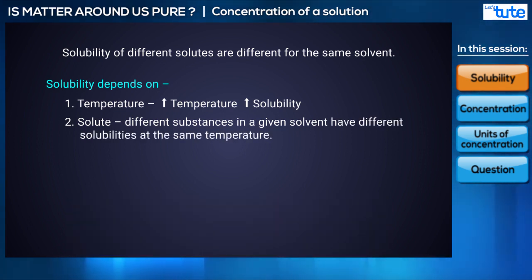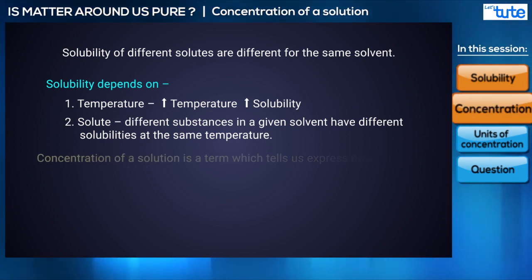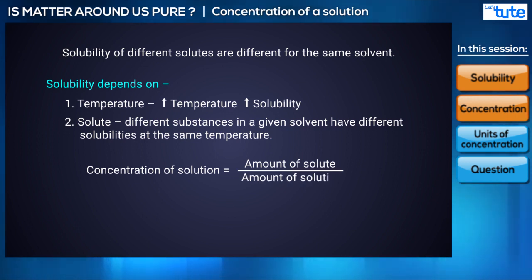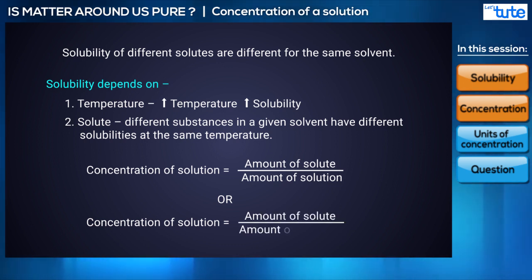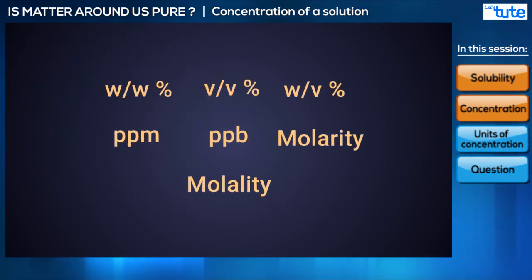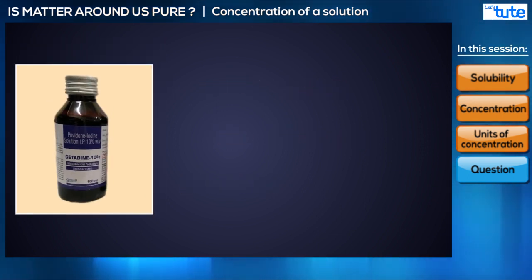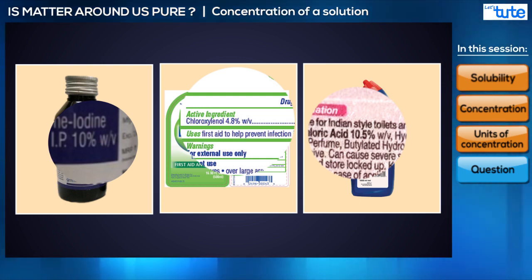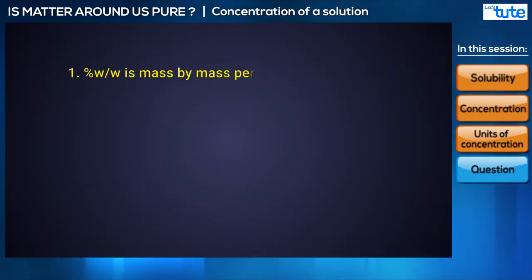Now we need a term to express how much solute and solvent is present in a given amount of solution. This term is called the concentration of a solution, defined as the amount of solute per amount of solution, or per amount of solvent. There are many ways of expressing concentration, but two are very common in daily life. If you check the label of a cough syrup, Dettol solution, or a floor or bathroom cleaner at home, you are likely to see the terms percentage W/W or percentage W/V — these are ways of expressing concentration.